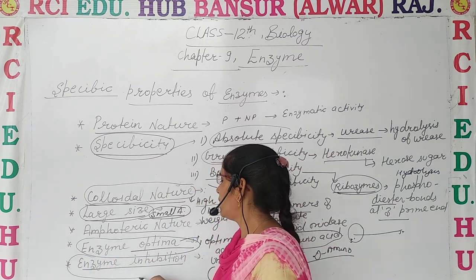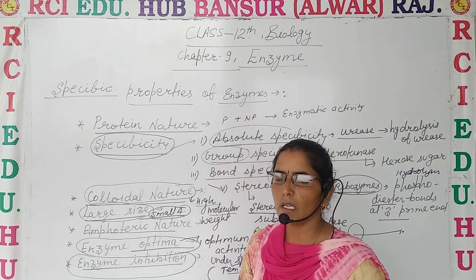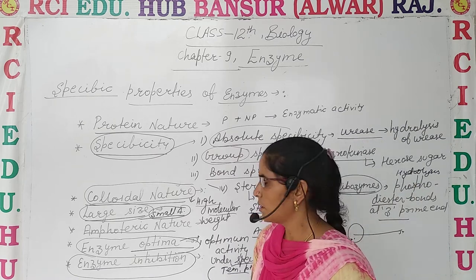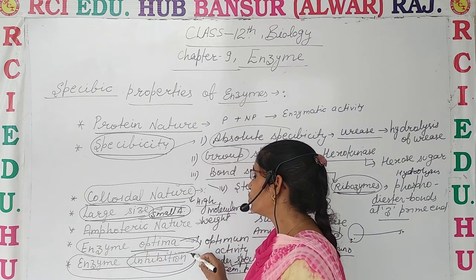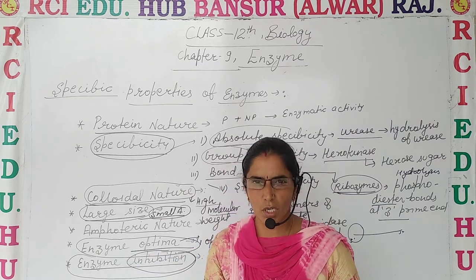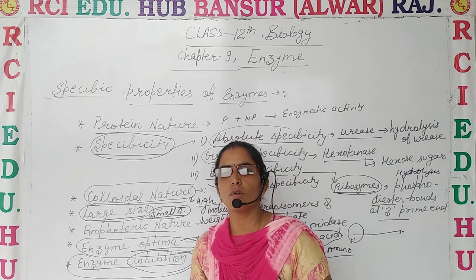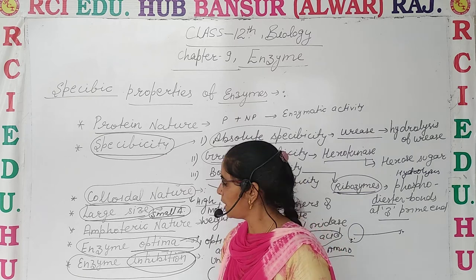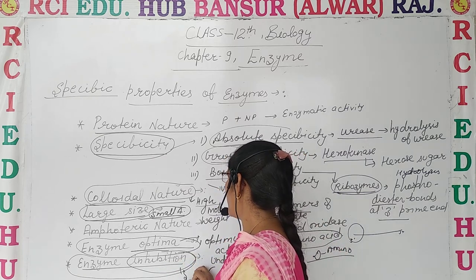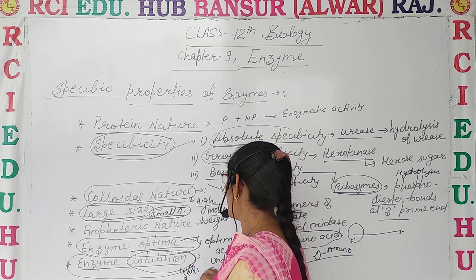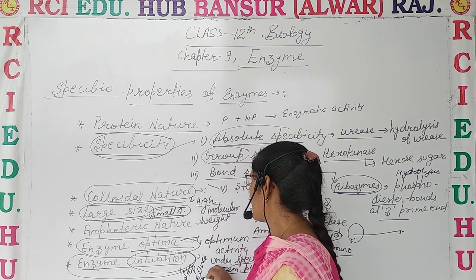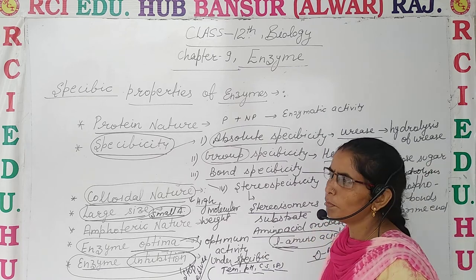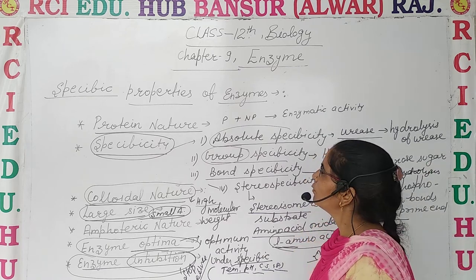The last property is enzyme inhibition — inhibition means to stop or reduce the activities of enzymes. Enzyme activity can be reduced due to the presence of some substances that resemble cofactors, or due to competitive inhibitors. So enzyme inhibition means to stop or reduce the activity of enzymes. These are the important properties of enzymes.